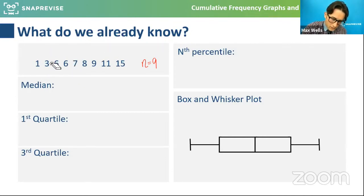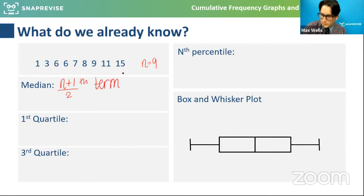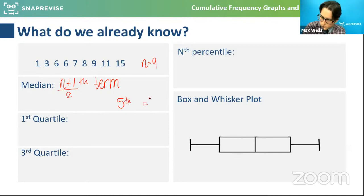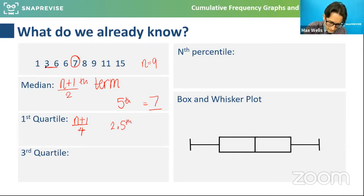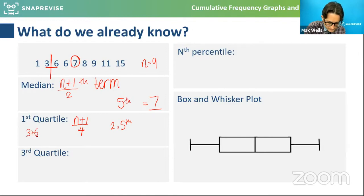For discrete values we can chop the data up into nice chunks. Some people learn the formula as n plus one over two. So nine plus one divided by two is the fifth item, which equals seven. You'd have the same amount of data points on either side. The first quartile - I'd do n plus one divided by four - gives the 2.5 value, which would be between the second and third items, between three and six.